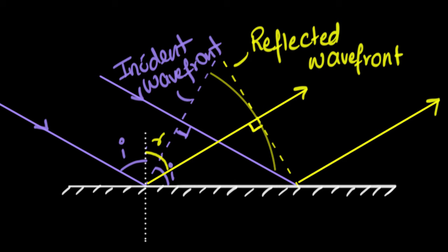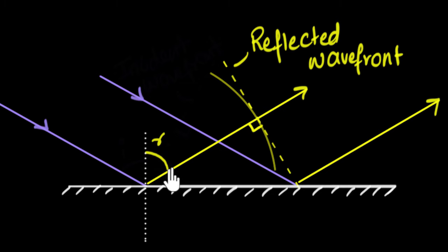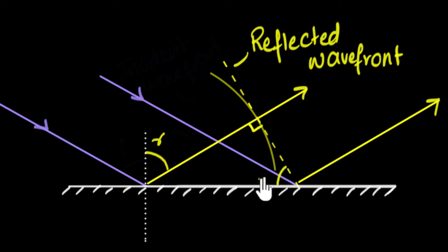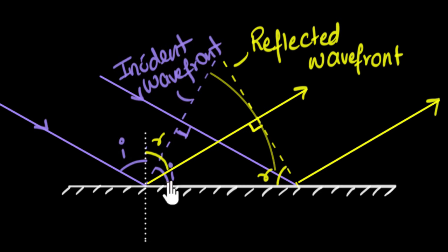Similarly, let's look at the reflected triangle. Since this angle is R, I know this adjacent angle is 90° − R, and therefore this angle inside the triangle must be R. So I've brought the angles into both triangles and they look congruent to me — so maybe they are. Let's go ahead and prove it.